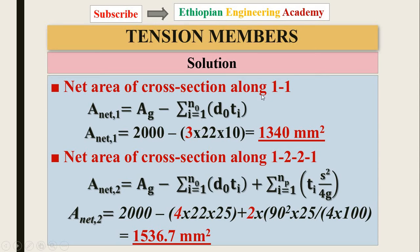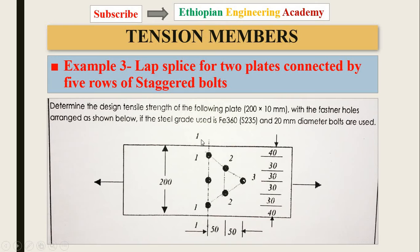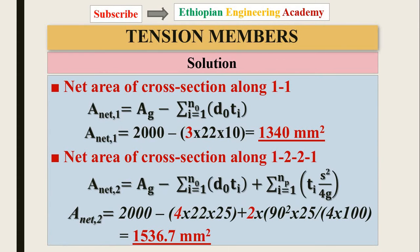The net area along line 1-1-1 is the gross area minus the hole diameter times thickness times the number of holes on that line. The gross area is 2000 mm² and the number of holes on line 1-1-1 is 3, giving net area 1. For the net area along zigzag line 1-2-1-2-1, we use the same formula with the number of holes along that path and the number of zigzag segments, plugging the numbers into the formula to get net area 2.